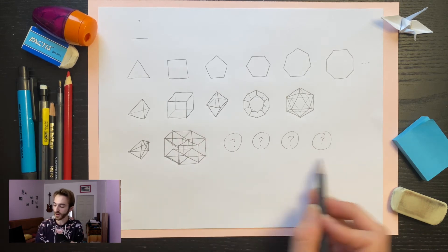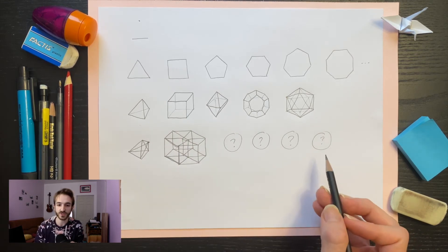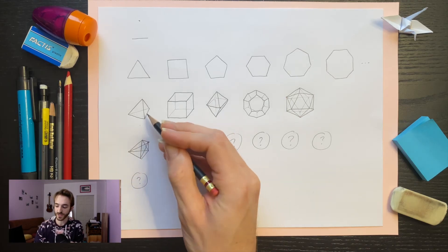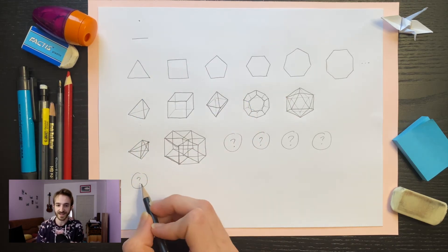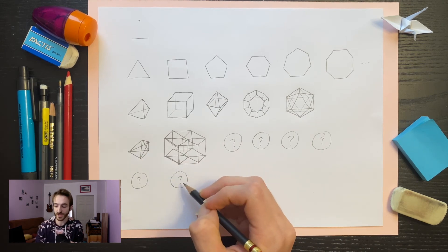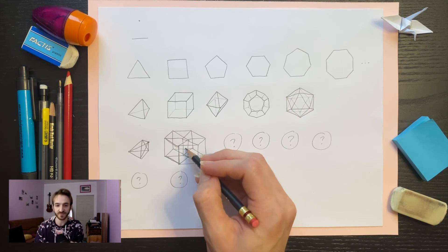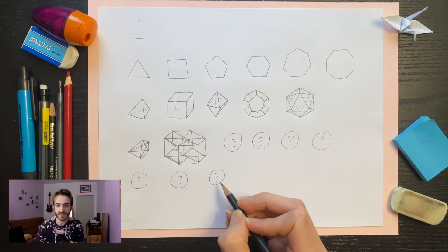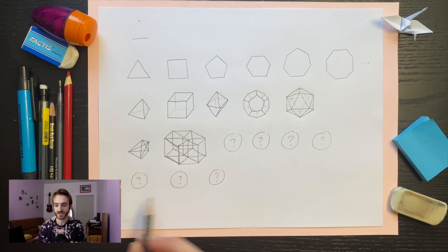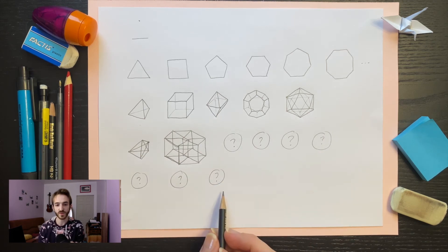And those are all of the polychora — all of the four-dimensional regular polytopes. Ready for dimension five? There are the next-dimensional equivalents: the triangle equivalent made out of six of those; the cube equivalent made out of 10 of those; and one made out of 32 of those. That's actually it for dimension five — those are the only ones.